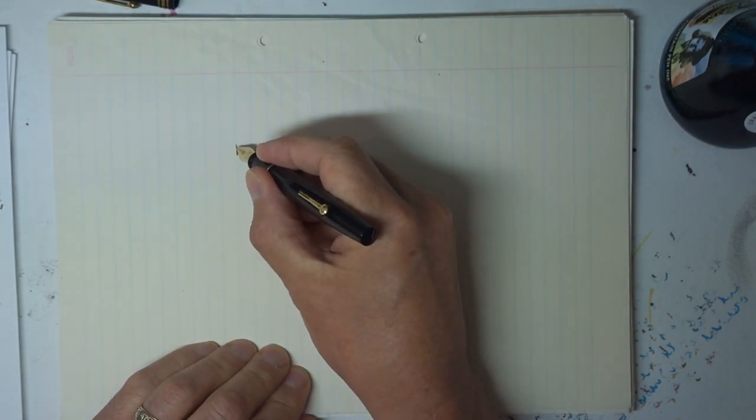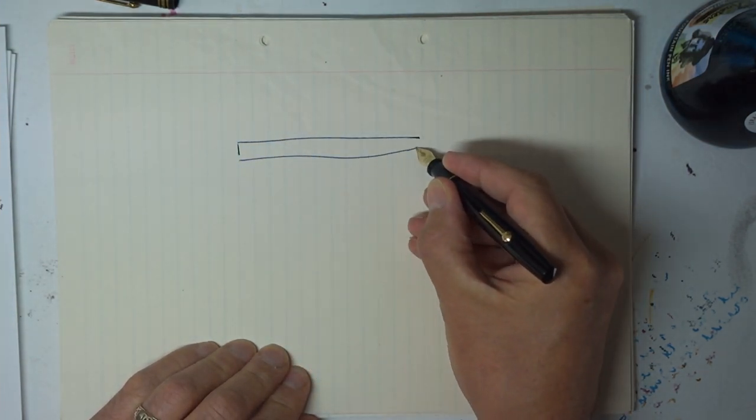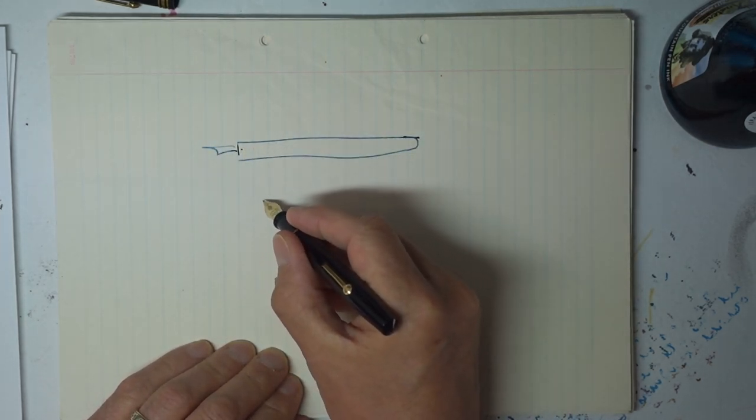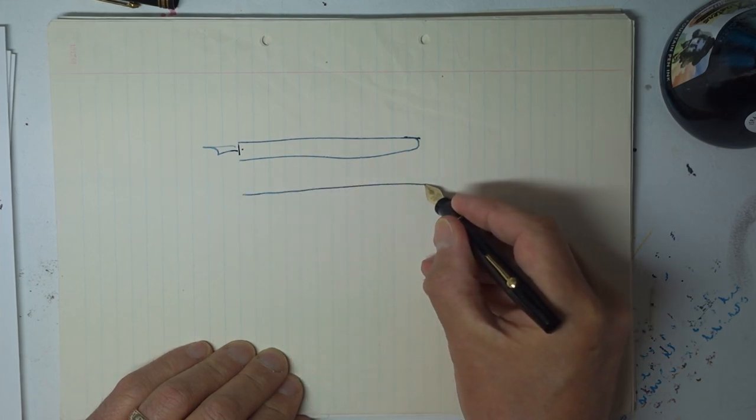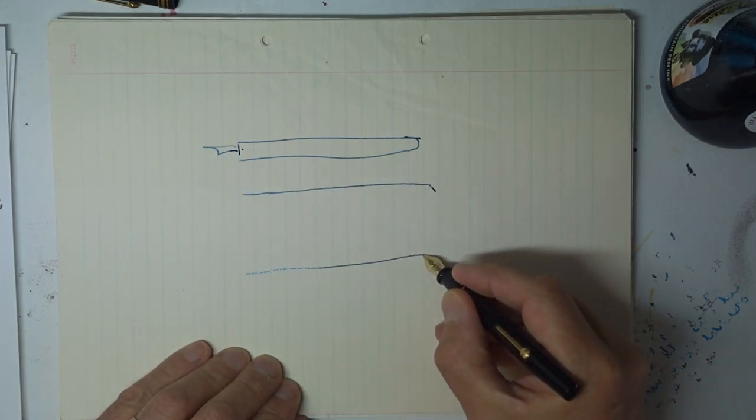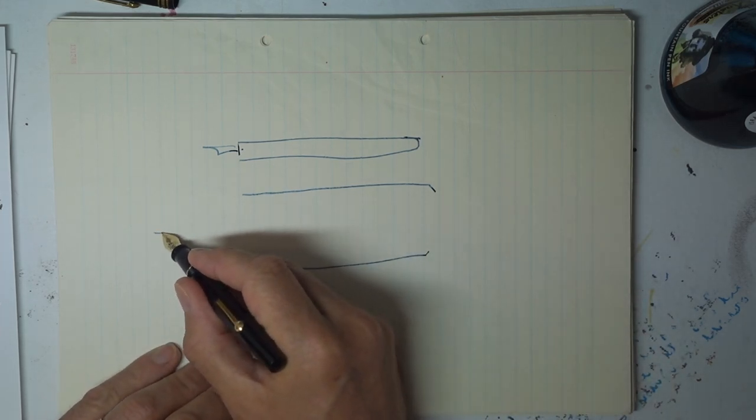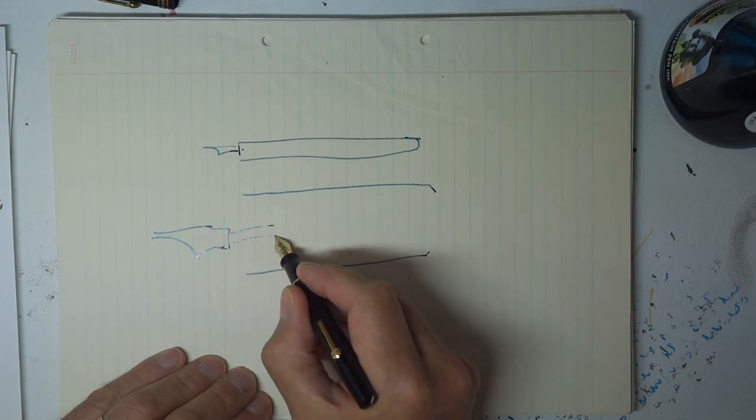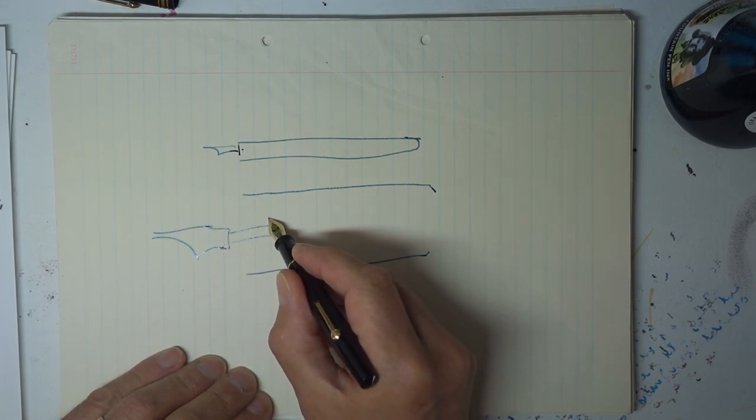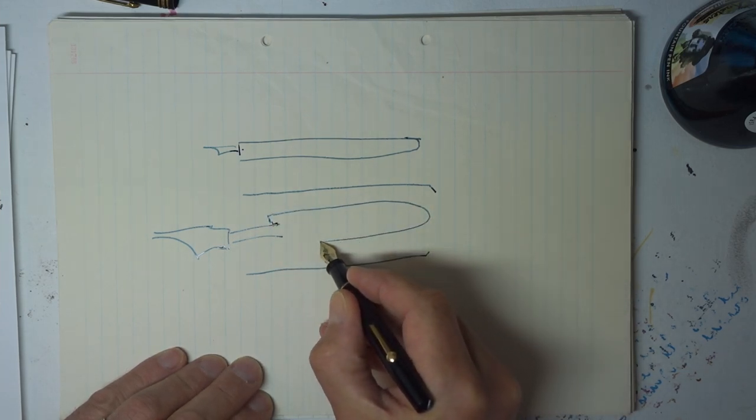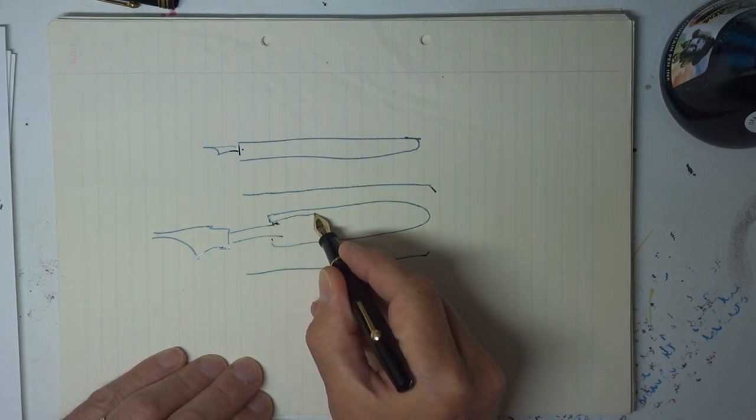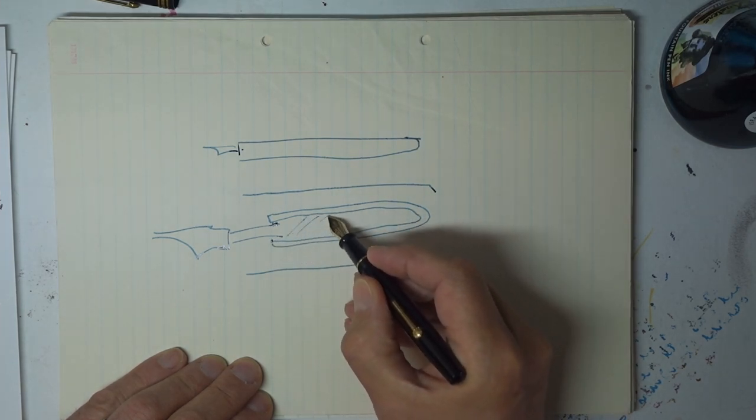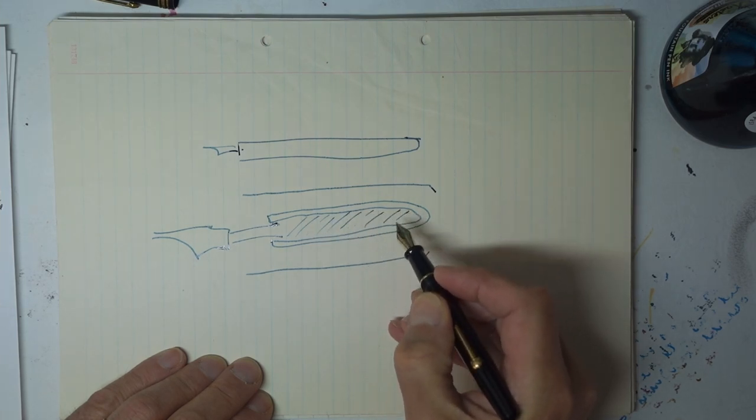So you have a pen barrel, nib at this end. Inside that barrel, if we open it up just a bit to make it look a bit easier, you've got the nib coming to the feed which goes into the pen and there is a sort of rubber sack inside the pen which is the reservoir itself. So you fill this sack full of ink and you have a working pen.